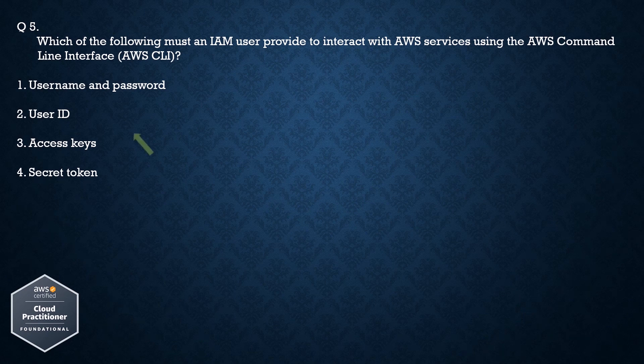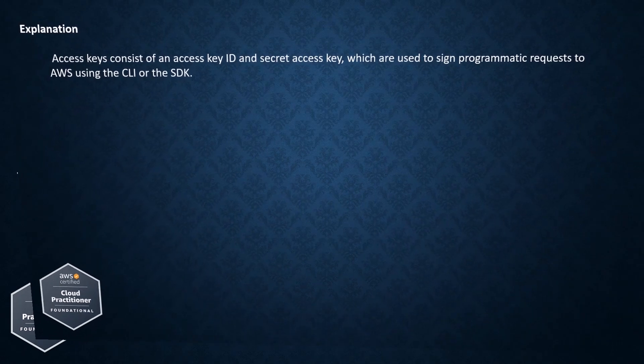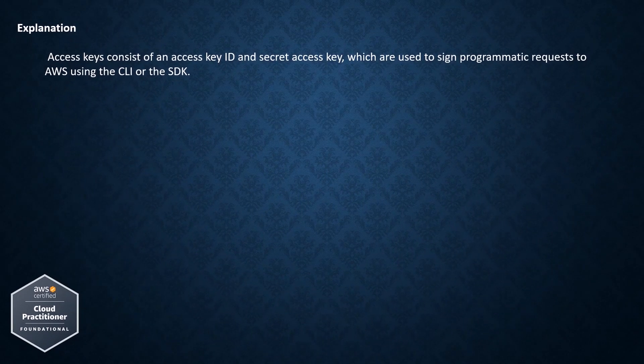The correct answer is access keys. Explanation: Access keys consist of an access key ID and secret access key, which are used to sign programmatic requests to AWS using the CLI or the SDK.